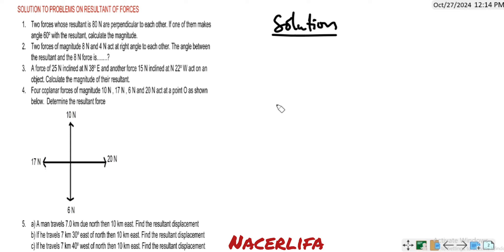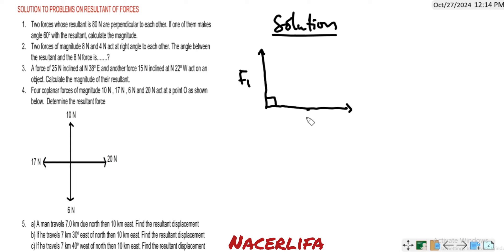So we have two forces — the resultant is 8 Newton and they are perpendicular to each other. Let's label them F1 and F2. These forces are perpendicular. We are told that one of them makes angle 60 degrees with the resultant, so let's construct a triangle.